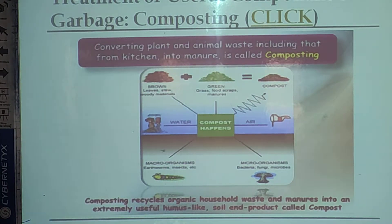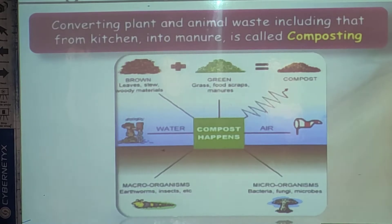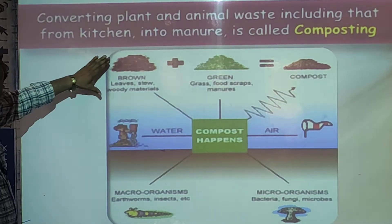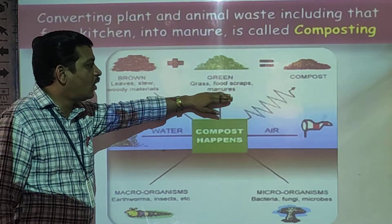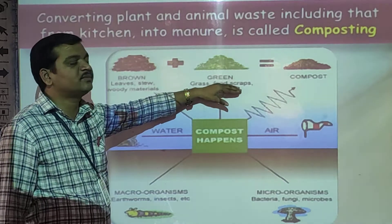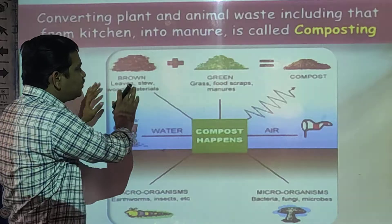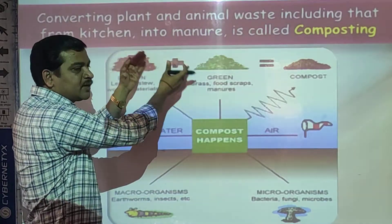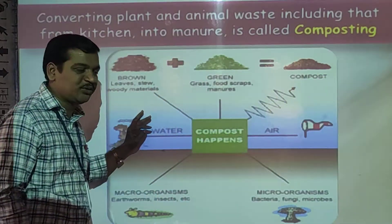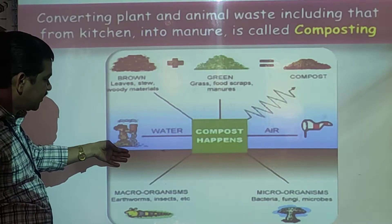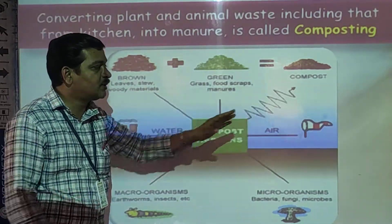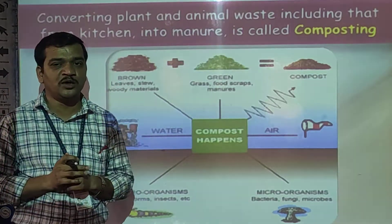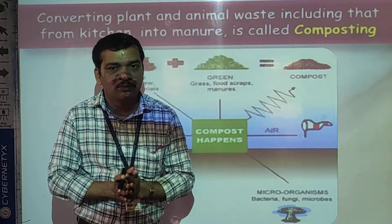Here you can see a picture. There are brown leaves or poor materials from plants, plus green grass or food. When these two materials are mixed together and decomposed, we get compost. Water, microorganisms — like bacteria, fungi, and microbes — are also involved. This is how the composting process works, producing manure at home.